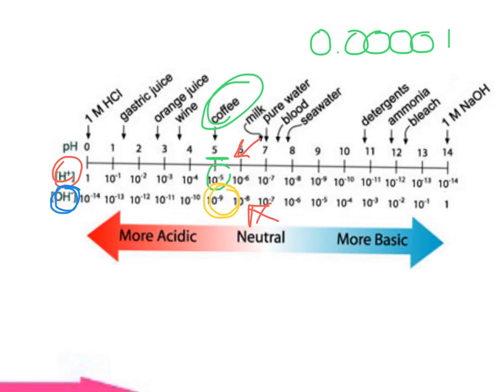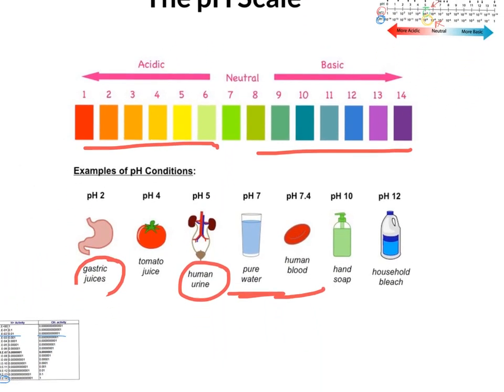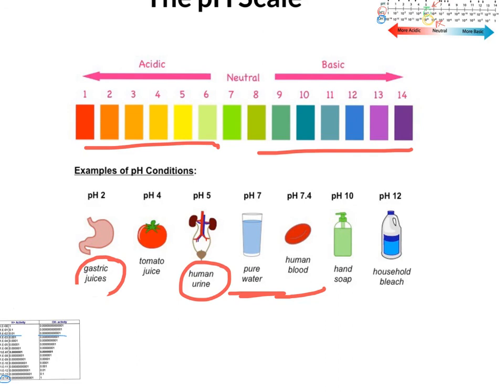So hopefully this tutorial has given you some insight into the pH scale and how OH and hydrogen ion concentrations are reciprocal to each other so that you can use a pH to predict any of the concentrations involved in determining pH scale. Thanks for listening.